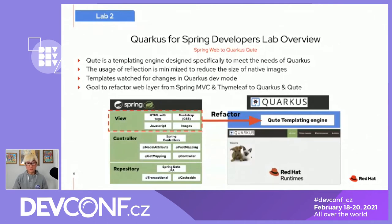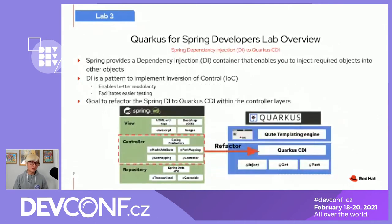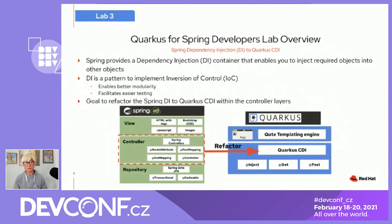Lab three is about dependency injection. Spring provides DI capability, and Quarkus also provides Contexts and Dependency Injection (CDI) by default. You'll learn how to convert Spring DI to Quarkus CDI.